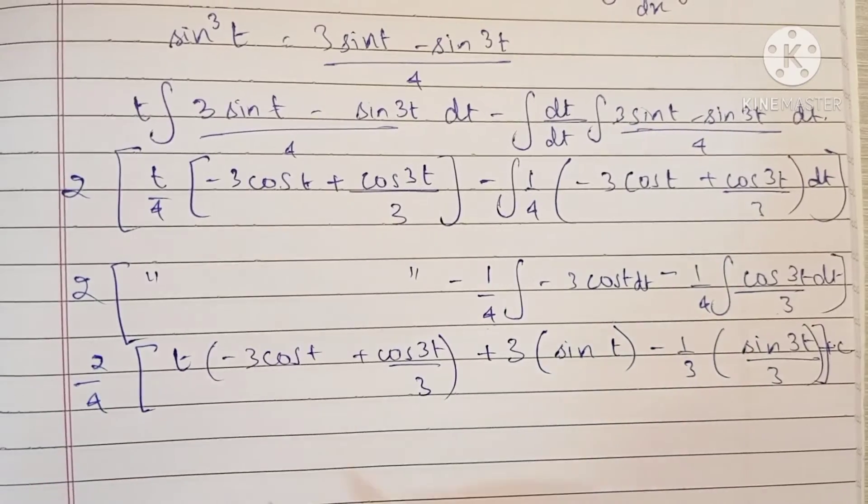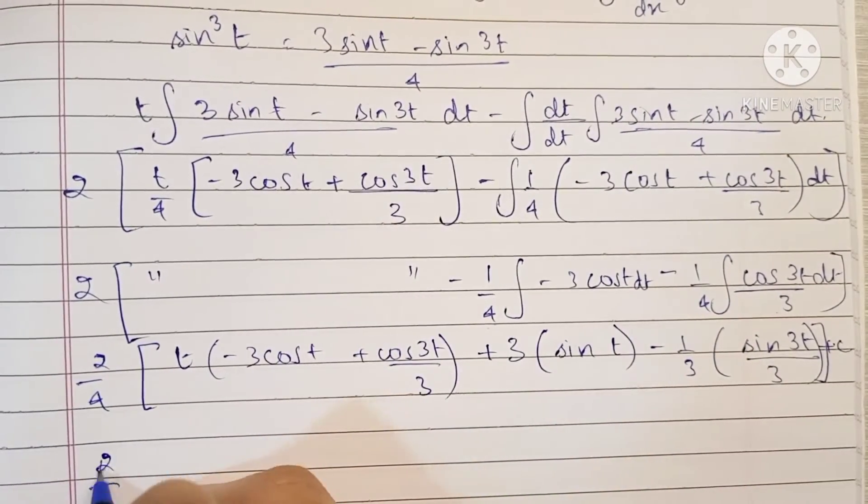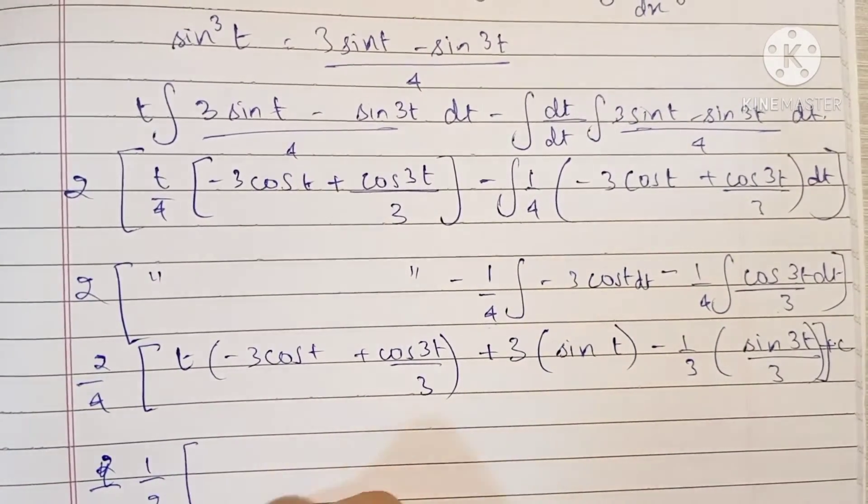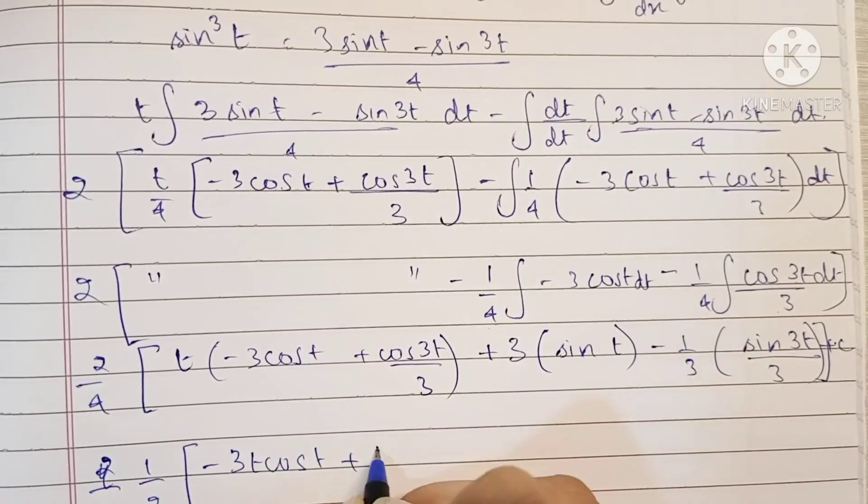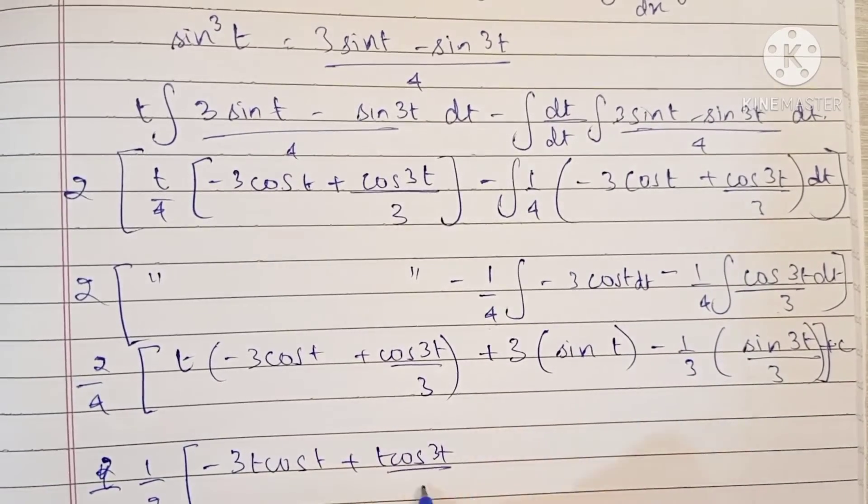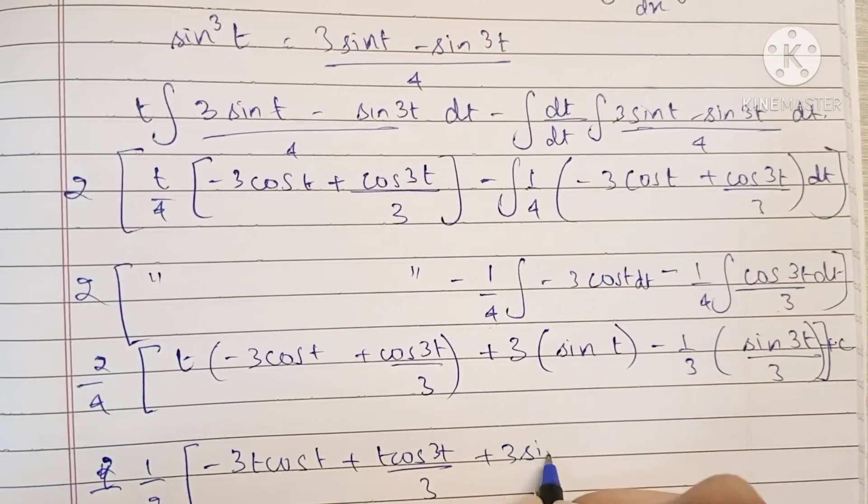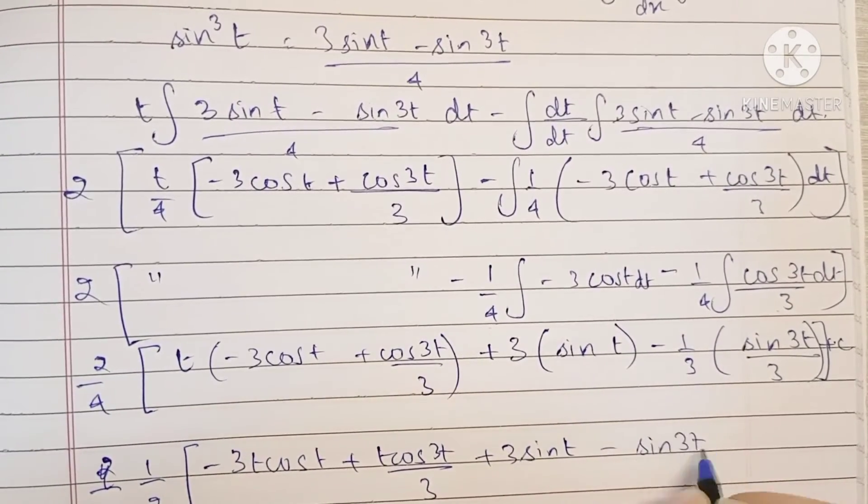All right, so now let's replace the t with root x, but first we'll simplify. This becomes 1 by 2 minus 3 t cos t plus t cos 3t upon 3, plus 3 sin t minus sin 3t upon 9.